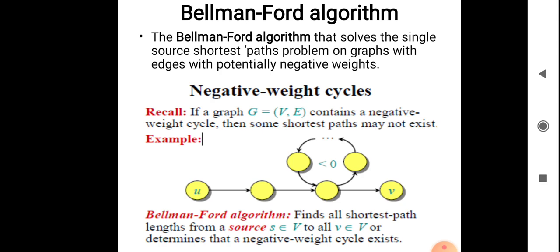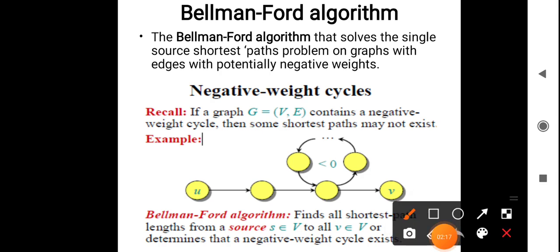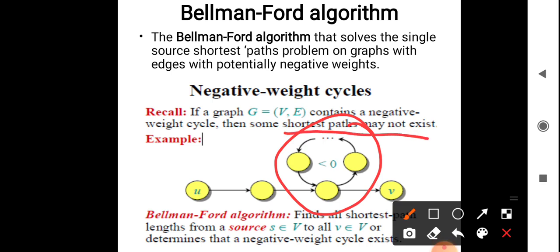If a graph G(V, E) contains a negative weight cycle, then some shortest paths may not exist. In that case, the shortest path is undefined because the cycle allows indefinitely decreasing path costs.